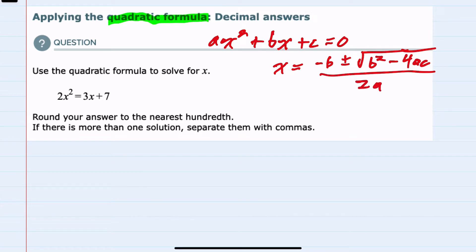In this example we have 2x² equals 3x plus 7, and we're asked to round our answers to the nearest hundredth. The first thing we note is that we do not have the correct form because we do not have ax² plus bx plus c equals zero.